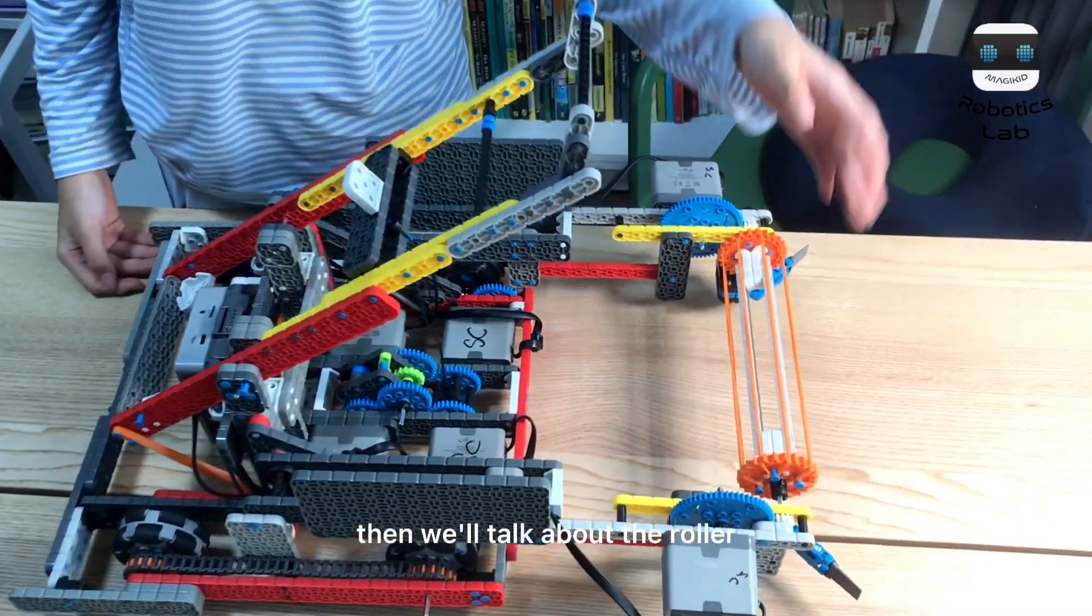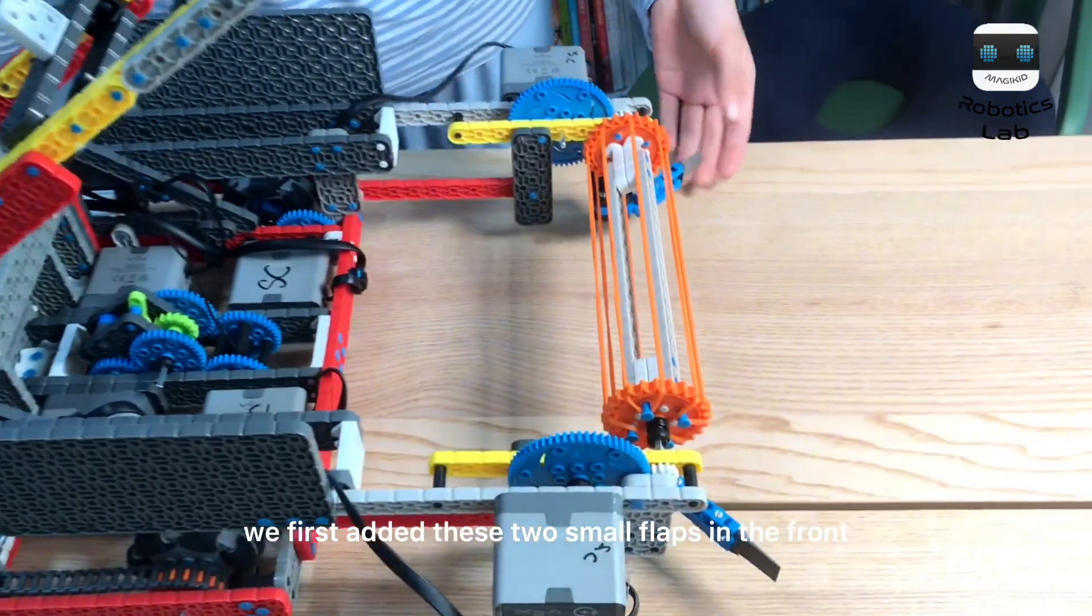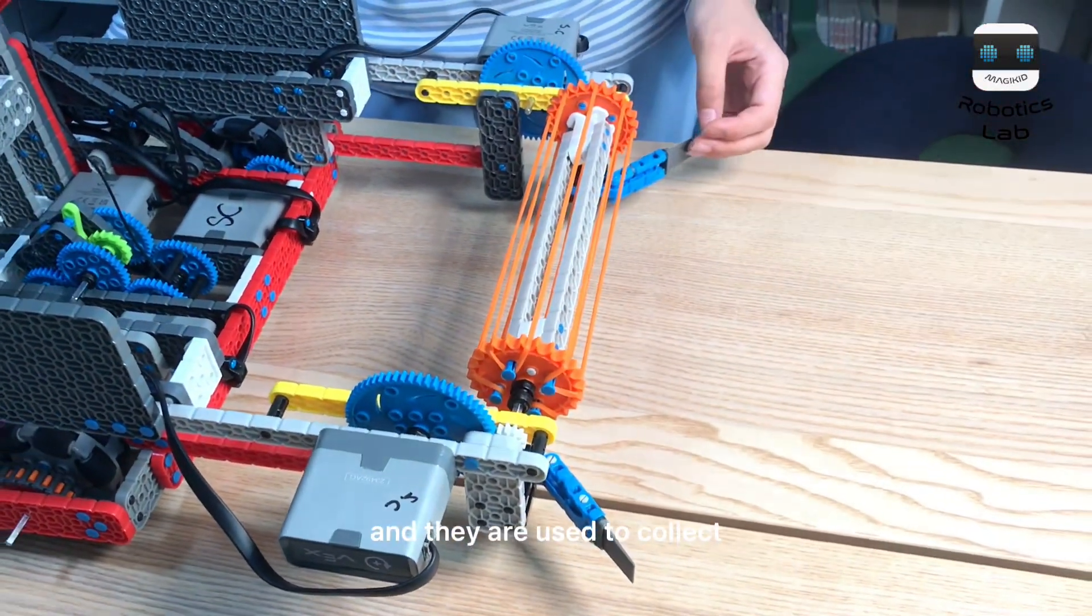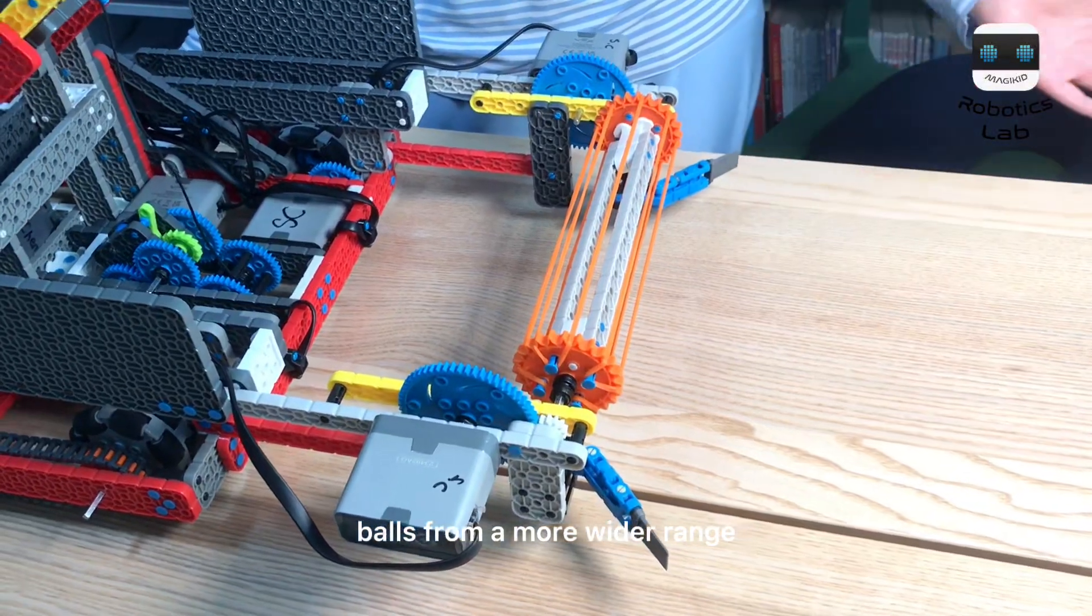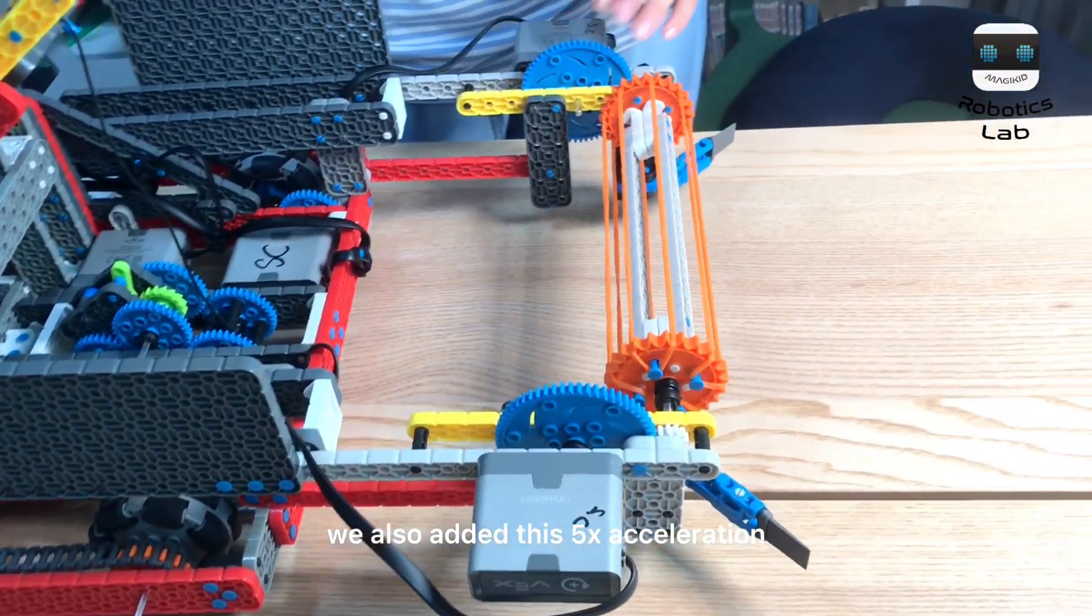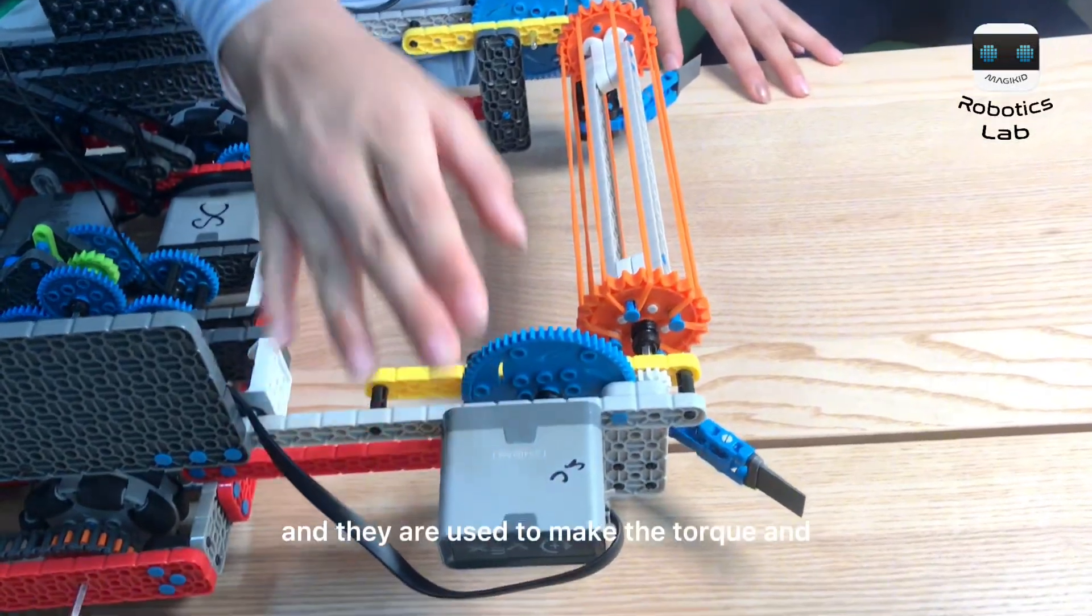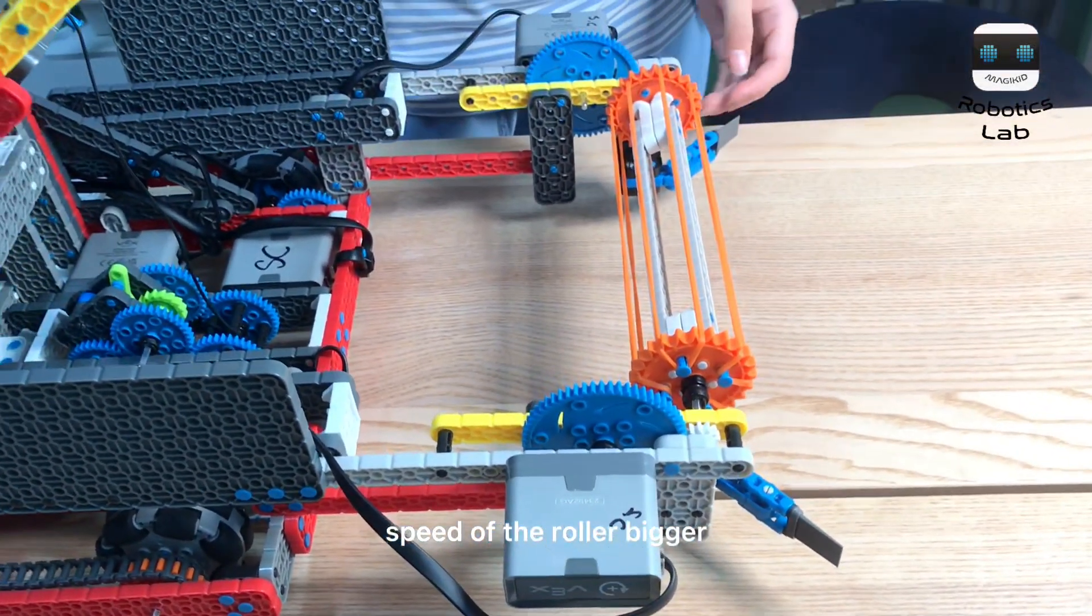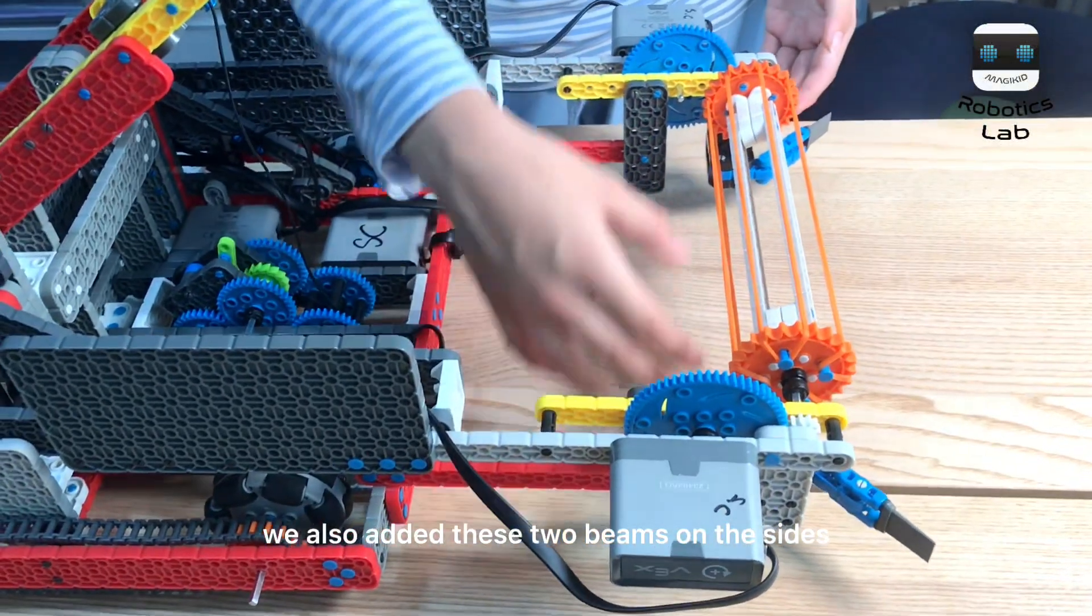Then, we'll talk about the roller. We first added these two small flaps in the front, and they are used to collect balls from a wider range. We also added this five-to-one acceleration and another motor, and they are used to make the torque and speed of the roller bigger.